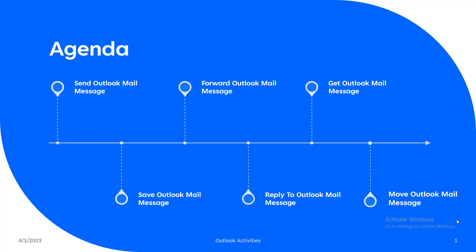Then we will see how we can use the Reply to Outlook Mail Message activity to reply to some specific emails, and then we will see how we can use the Move Mail Message activity to move a mail from a particular folder to some other folder. So without wasting any time, let's move to UiPath Studio where we will implement all these activities and learn about them.